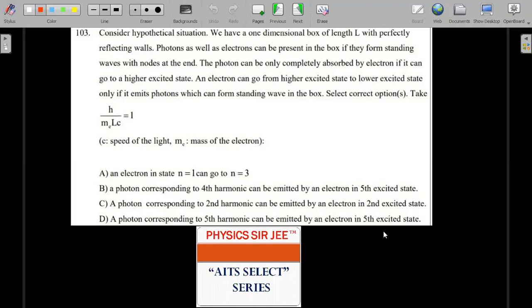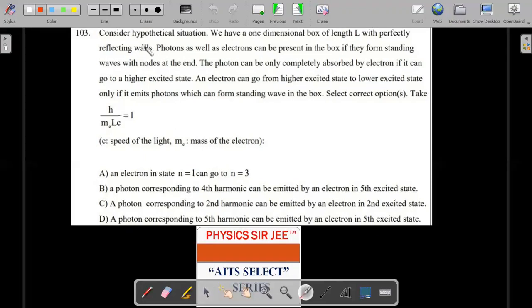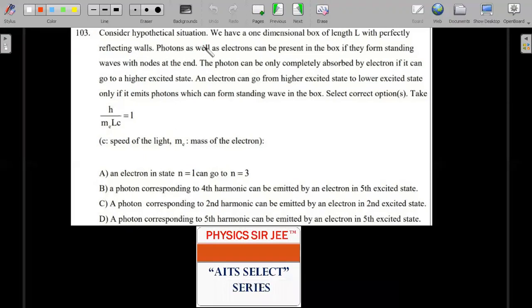Here's the formal wording: consider a hypothetical situation where we have a one-dimensional box of length L with perfectly reflecting walls. Photons as well as electrons can be present in the box if they form standing waves with nodes at the end.